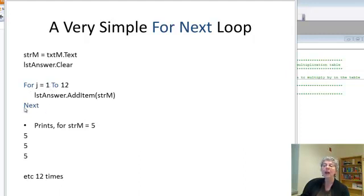When we hit this next, j becomes 2 and we do the loop again. Hit the next, j becomes 3, we do the loop again, and we keep going until we get up to 12. So we're going to get a string of 12 fives in our list box.